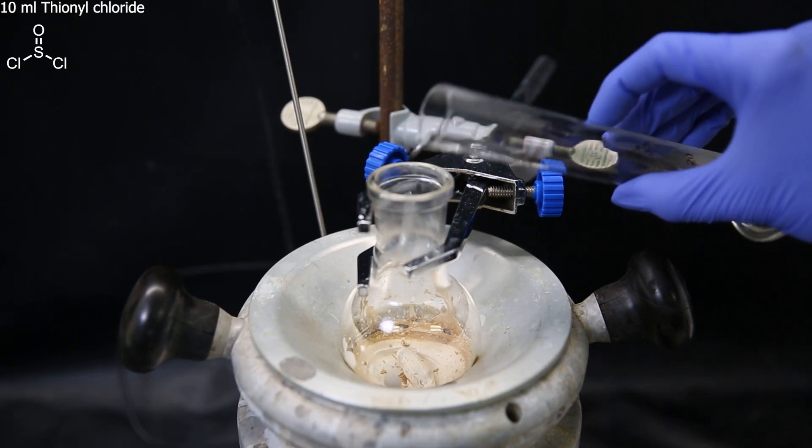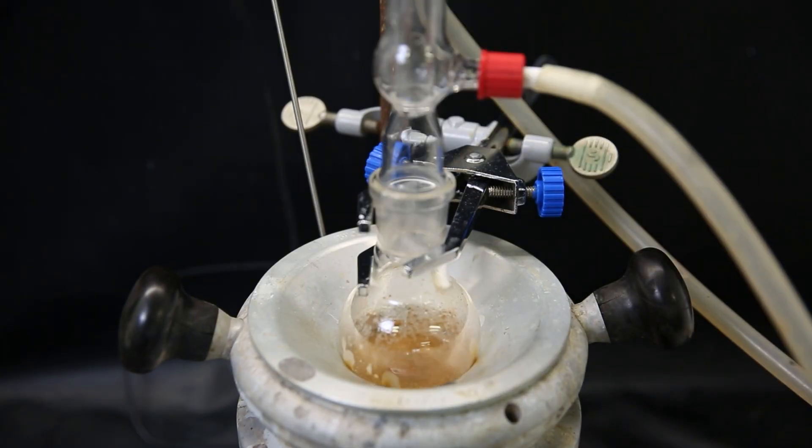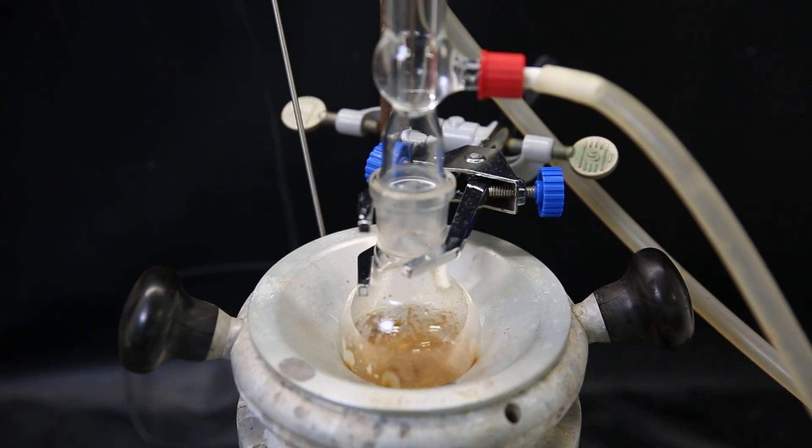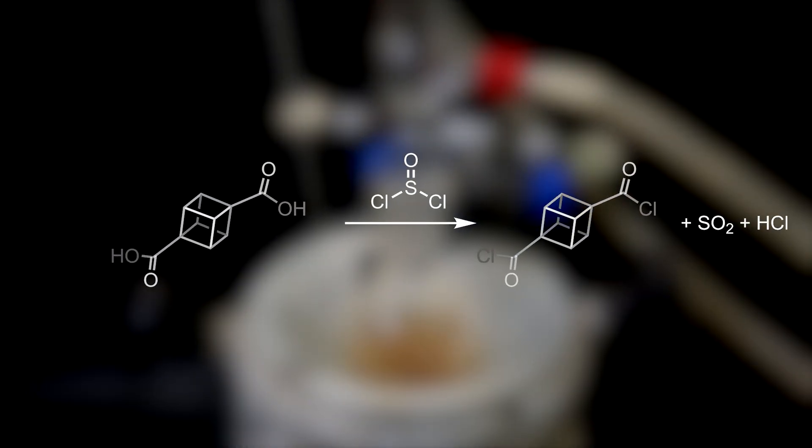Now for the next reaction, to the solid I add 10 ml of thionyl chloride and I attach a condenser. I then reflux this mixture for 4 hours. In the reaction, thionyl chloride converts the carboxylic acids into acid chlorides.